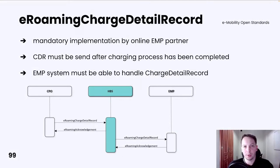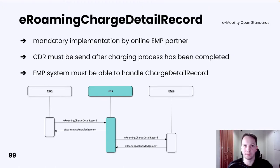As we already know from CPO Authorization Service, a CDR must be sent after the charging process has been finished. In order to be an online EMP, you must implement the E-Roaming Charge Detail Record operation. The EMP system must be able to handle a Charge Detail Record request and return an E-Roaming Acknowledgement as a response.